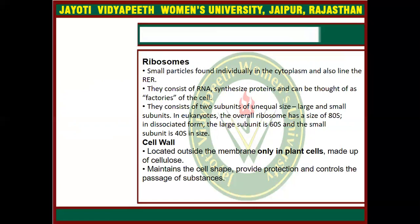The next organelle is the cell wall, which is found only in plant cells or in some microbes, but is absent in animal cells. It is made up of cellulose. It maintains the cell and provides protection from external damage.